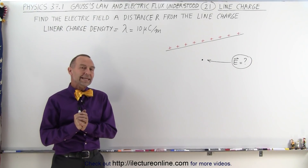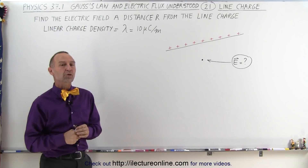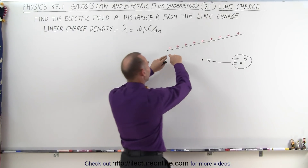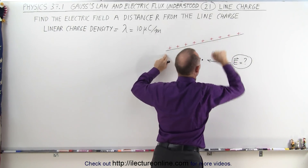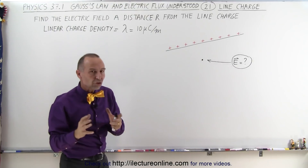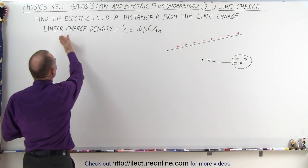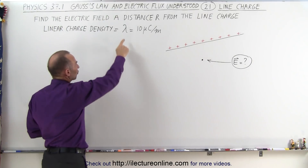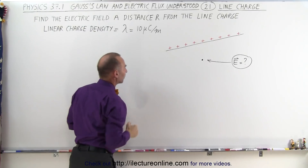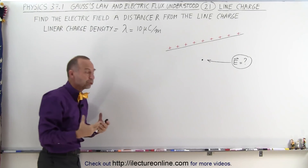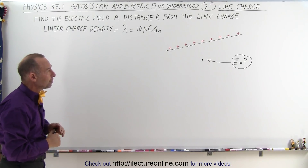Welcome to ElectronLine. Here we have a linear charge distribution — a long conductor with some excess charge. The amount of charge on that conductor can be expressed in terms of the linear charge density. We use the Greek letter lambda, expressed in a certain amount of charge per unit length, which is meters. In this case it's 10 microcoulombs per meter.